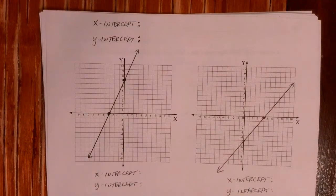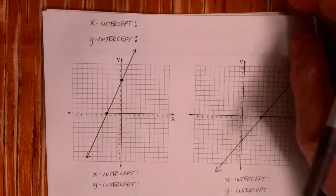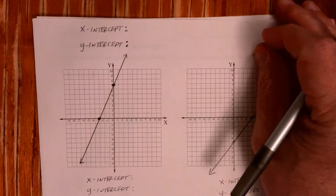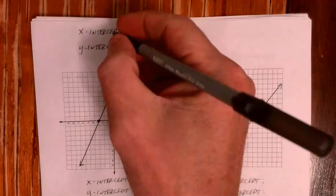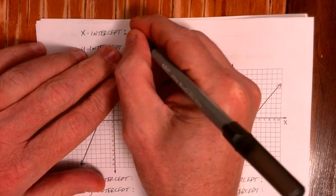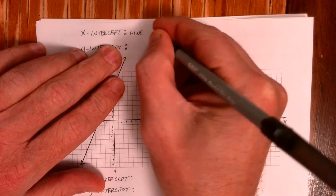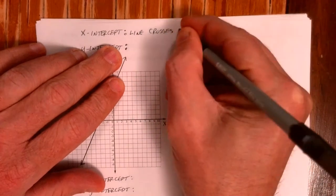We're going to talk about x-intercepts and y-intercepts today. I've drawn some lines, so if you're in class, we're actually going to do this in class. This is more for people at home — you'll see probably almost the exact same lesson. So I'm going to give you a definition first. The x-intercept is where the line crosses the x-axis.